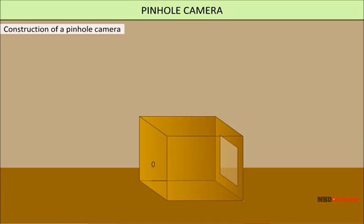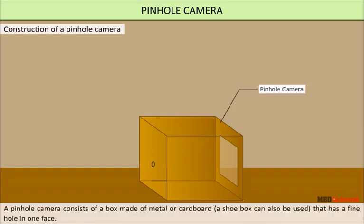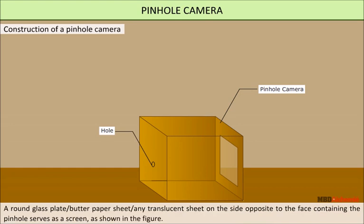Pinhole Camera. A pinhole camera consists of a box made of metal or cardboard. A shoebox can also be used, which has a fine hole in one face. A round glass plate, butter paper sheet, or any translucent sheet on the side opposite to the face containing the pinhole serves as a screen, as shown in the figure.